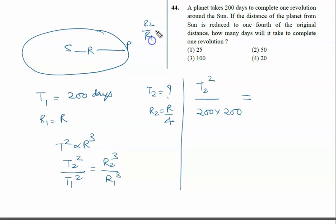That is 1 by 4. Then whole cube, it is 1 by 4 into 4 into 4. So T2 square is given by 200 into 200 upon 4, 4 into 4 into 4.